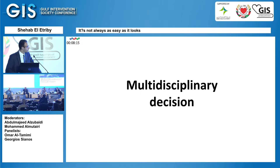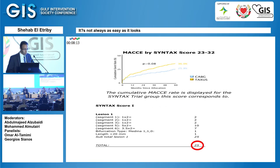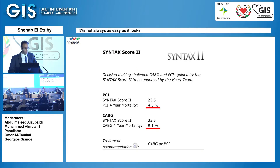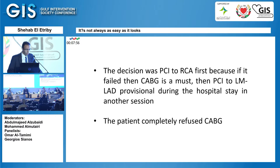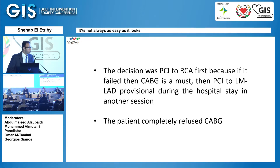Our decision was a multidisciplinary approach. He had a SYNTAX score I of 25, and due to the comorbidities, the SYNTAX score II favored PCI with lower four-year mortality. The decision was between CABG or PCI. The patient completely refused CABG, so our decision was to do PCI to the RCA first.